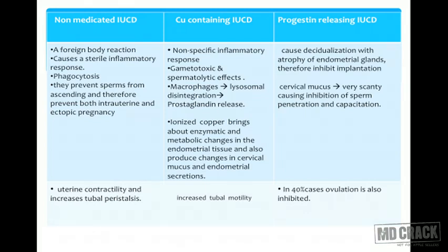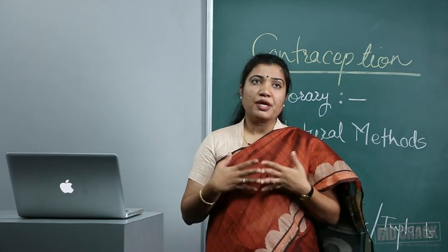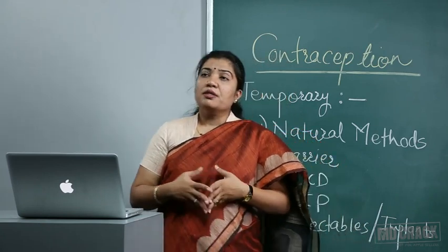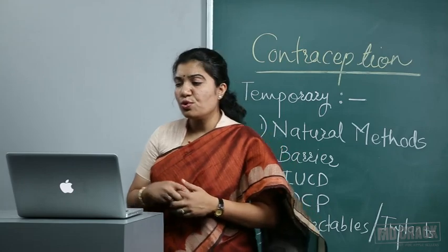Mechanism of action: Non-medicated IUCDs act as a foreign body, producing a sterile inflammatory response sufficient to be spermicidal, and increase uterine contractility and tubal peristalsis. Copper-containing IUCDs produce enzymatic and metabolic changes in endometrial tissue, increase phagocytosis, and alter cervical mucus and endometrial secretion — combined effects preventing pregnancy.